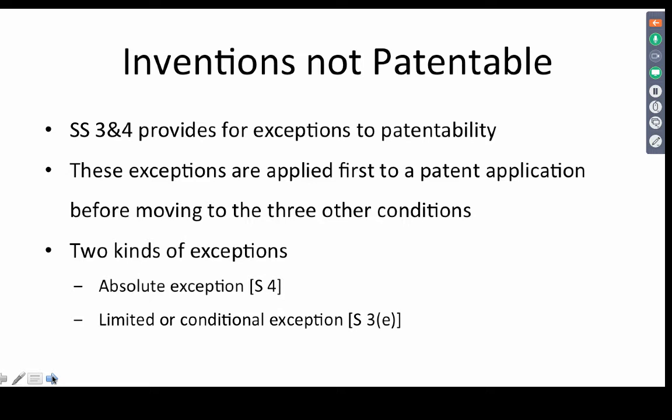These exceptions broadly fall into two categories if you look at sections 3 and 4. One category is absolute exceptions — in whatever case, you cannot get over these exceptions. You are barred from patenting an invention which falls within that category. Section 4, which deals with inventions relating to atomic energy, is a classic example.